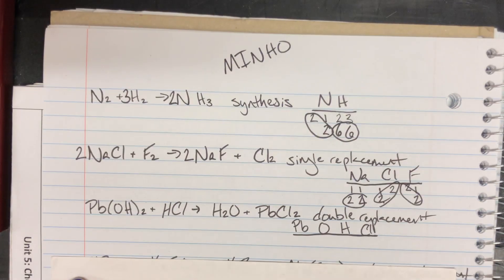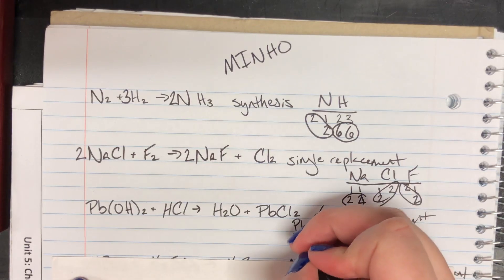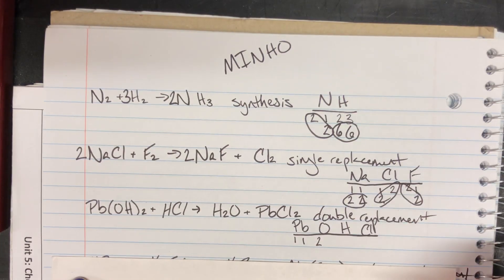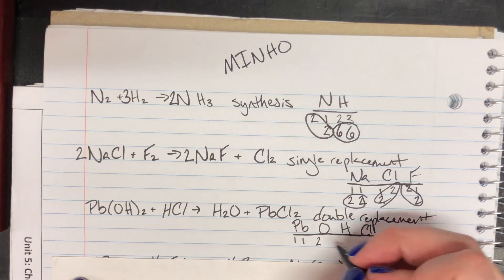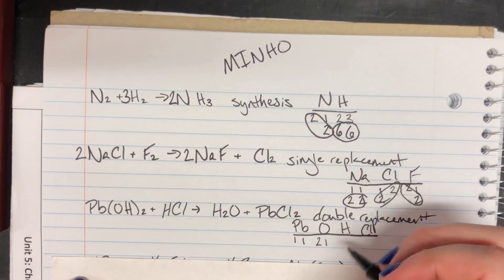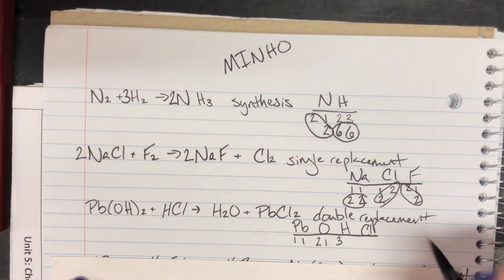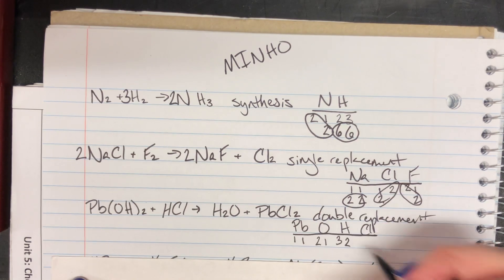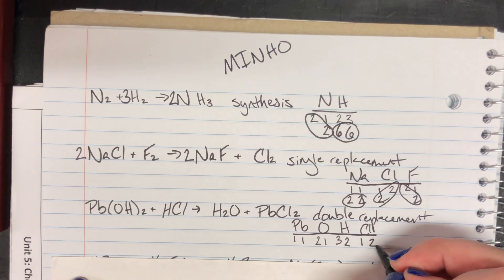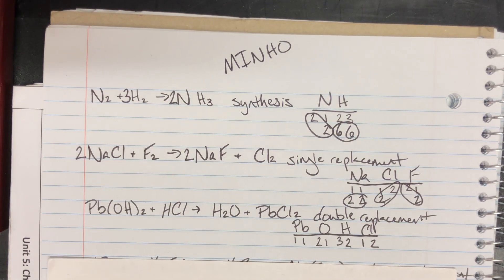Let's start counting. For lead: one on the left and one on the right. For oxygen: two on the left — that two distributes inside the parentheses — and one on the right. For hydrogen: two plus one equals three on the left, and two on the right. For chlorine: one on the left and two on the right. Using MINHO, I attack lead first — it's fine, so I'll leave it alone. No polyatomic ions are readily available, so I move on to non-metals, which in this case is only chlorine.